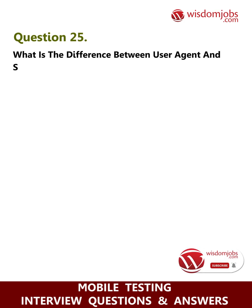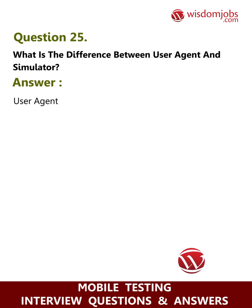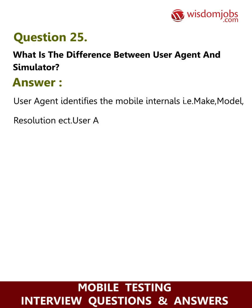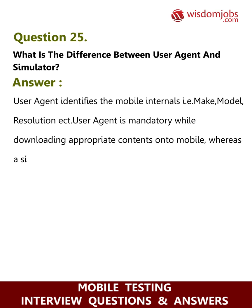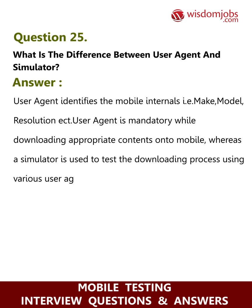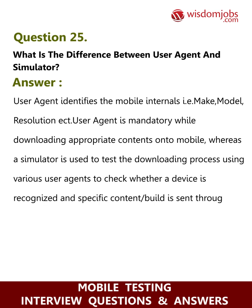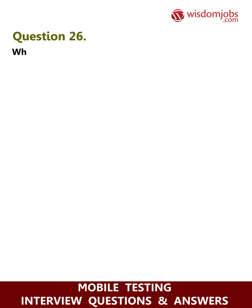Question 25: What is the difference between a user agent and a simulator? Answer: A user agent identifies the mobile internals — make, model, and resolution. A user agent is mandatory while downloading appropriate content onto mobile. A simulator is used to test the downloading process using various user agents to check whether a device is recognized and specific content build is sent through.